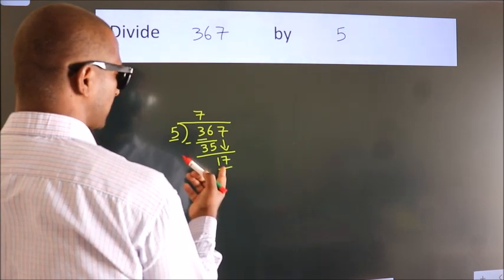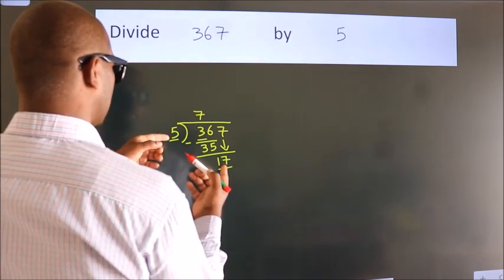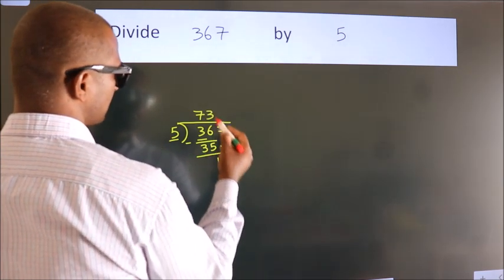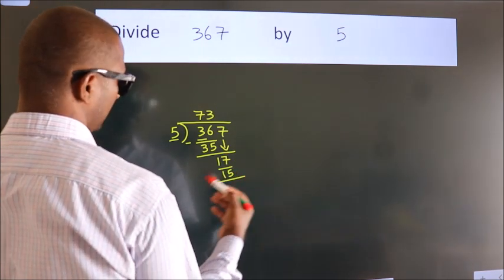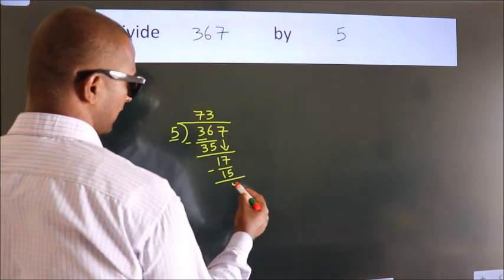A number close to 17 in the 5 table is 5 times 3 equals 15. Now we subtract. We get 2.